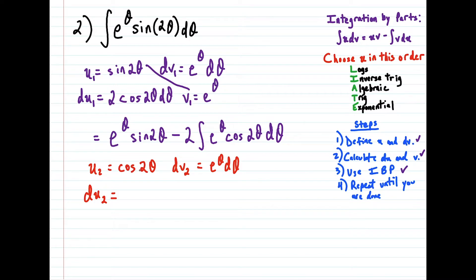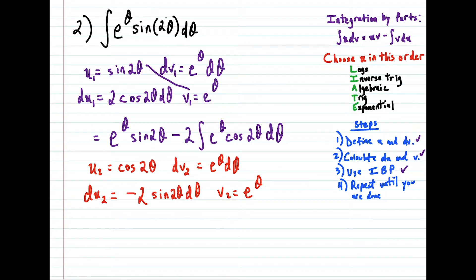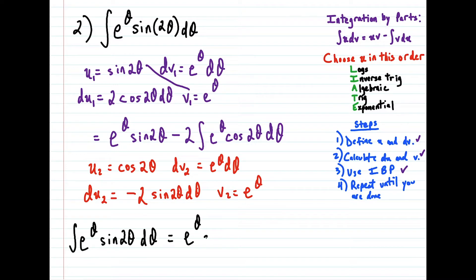So now the derivative of cosine 2θ is going to be negative sine 2θ dθ — and I leave a space because we have to do the chain rule — the derivative of 2θ is still 2. And now v₂ is just equal to e to the θ. So for this line, I'm going to rewrite the question: the original integral was the integral of e to the θ sine 2θ dθ.